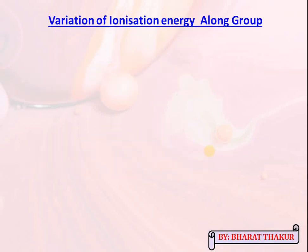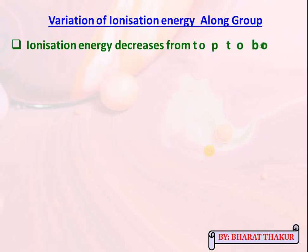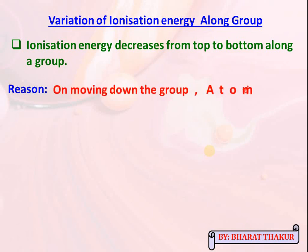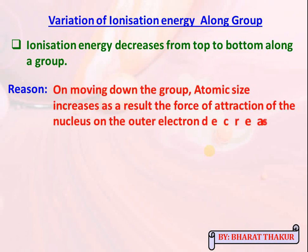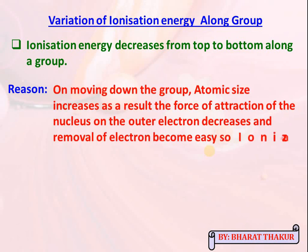Variation of ionization energy along a group: ionization energy decreases from top to bottom. The reason is that moving down the group, atomic size increases, so the force of attraction of the nucleus on the outer electron decreases. Electrons are loosely held and removal becomes easy, so less energy is required and ionization energy decreases.